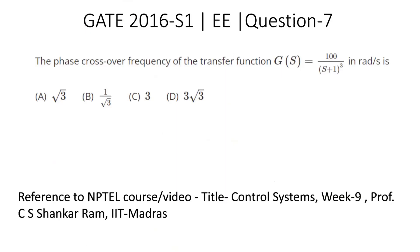Therefore, the answer is option A: √3 radian per second.